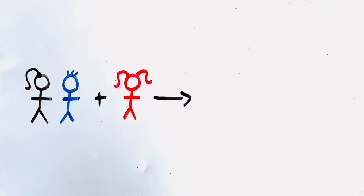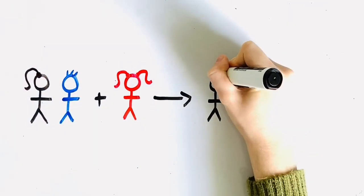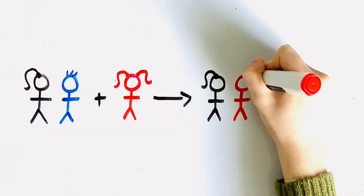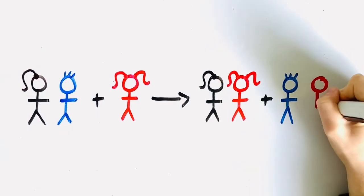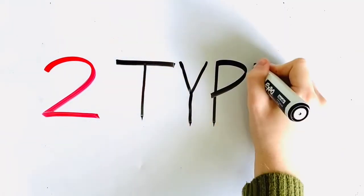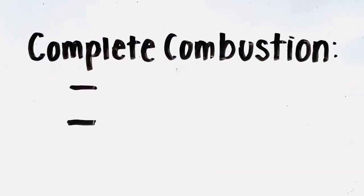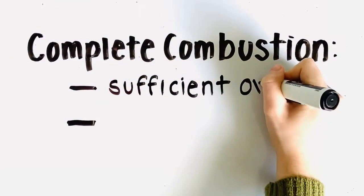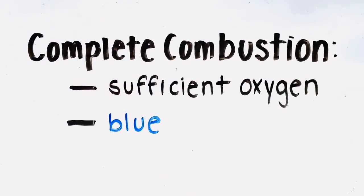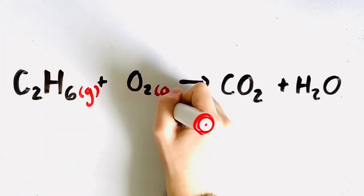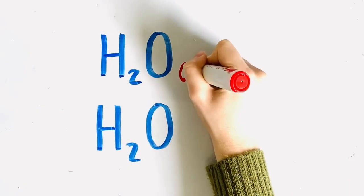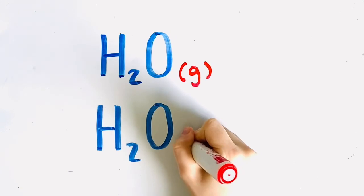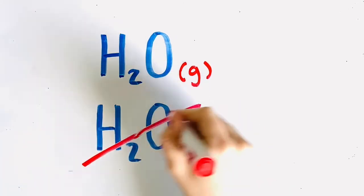Here is an analogy: Sally and George are friends and Ashley is alone. Ashley decides she wants to become friends with both Sally and George, but she splits them up and spends time with both of them. There are two types of combustion reactions. First, complete combustion occurs when a sufficient amount of oxygen is present. A blue flame color indicates complete combustion. For example, ethane gas plus oxygen yields carbon dioxide plus water vapor. When water is produced during a combustion reaction, it is produced in gas form as water vapor, not a liquid.